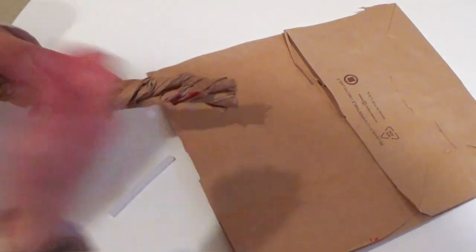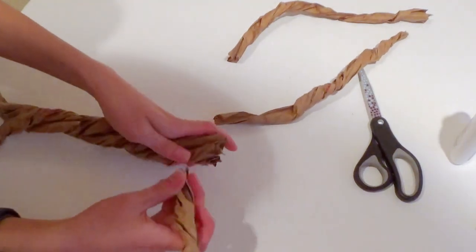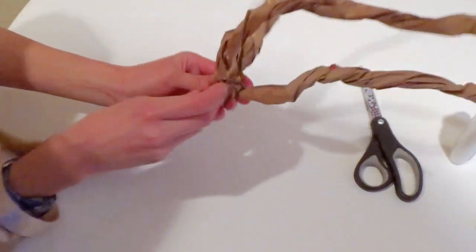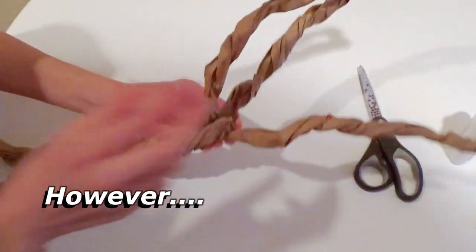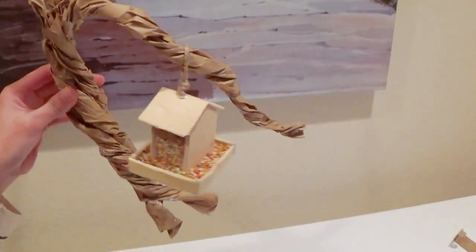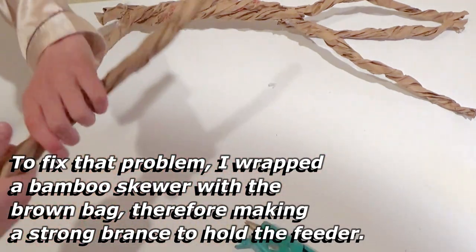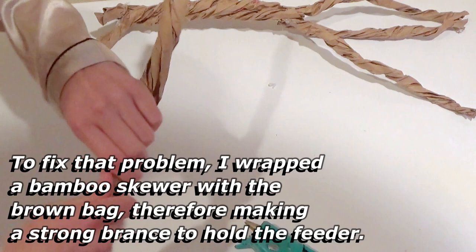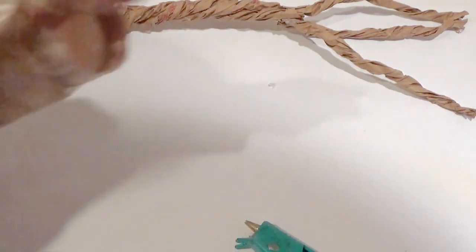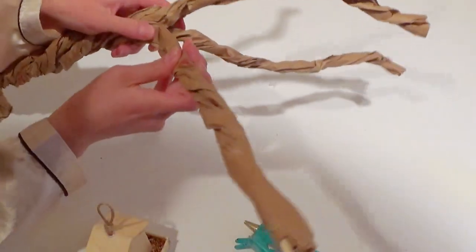Now make several more of these twisted twigs that are a little thinner. We're going to glue them on here to make branches. I made three more of these little branch things and I'm going to hot glue them on to make a tree type thing. Now I'm going to glue this branch to the base here.